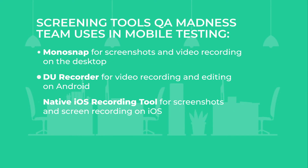The better a QA engineer describes a bug, the easier it will be to fix it. That's why various screening tools are very helpful during testing. Some of the favorite ones among QA Madness specialists are Monosnap, DU Recorder, and the native iOS recording tool.